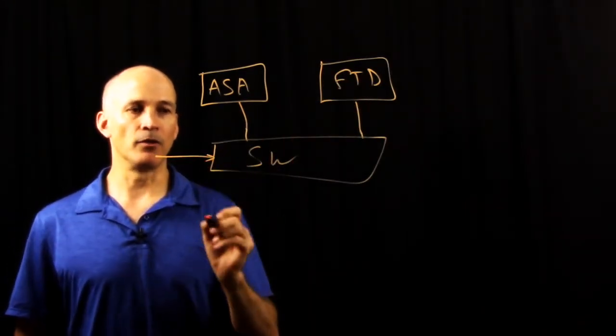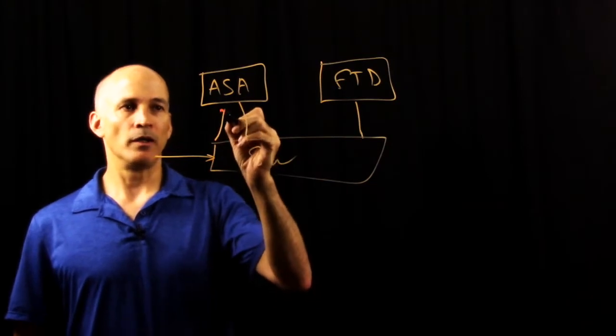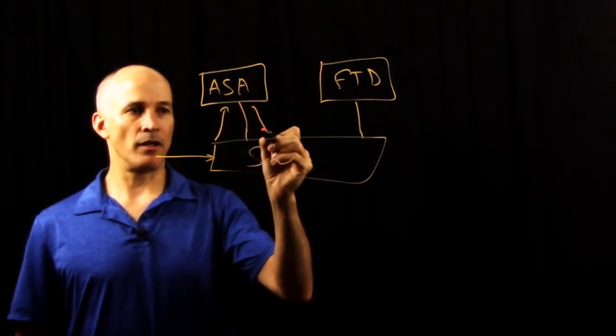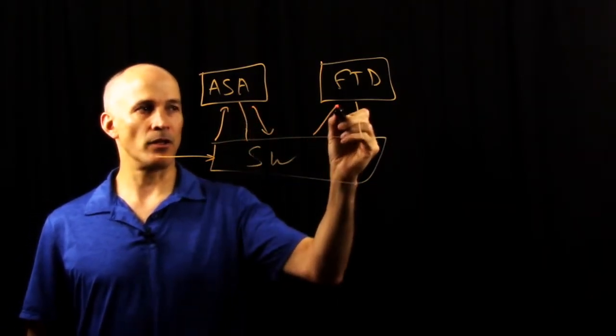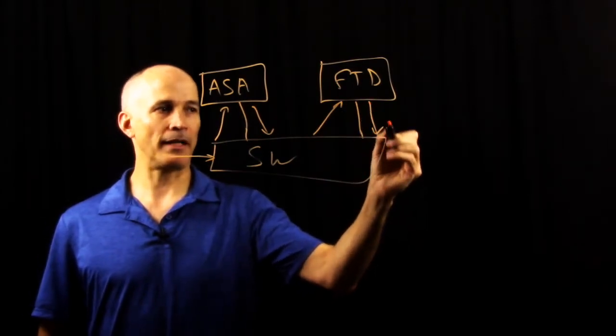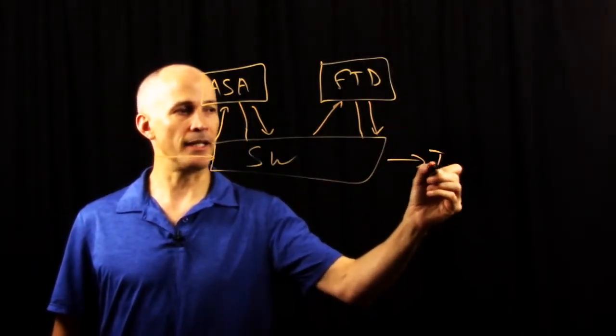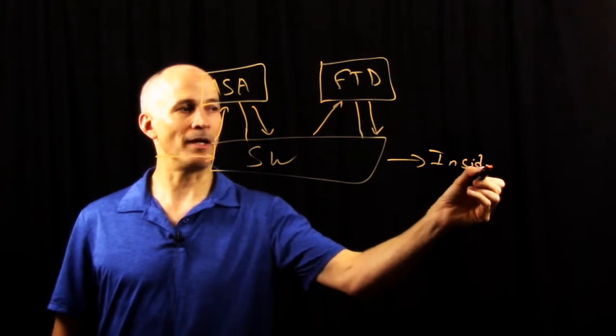As traffic enters the switch, it'll proceed up through the ASA cluster and then back down from the ASA cluster and then up through the FTD cluster, back down through the FTD cluster, and then off to the inside network or wherever else it might be headed.